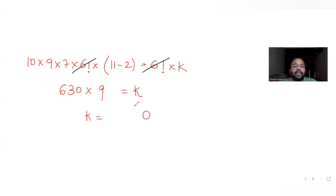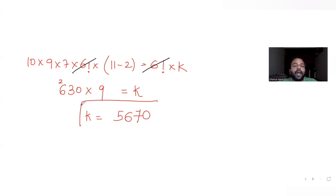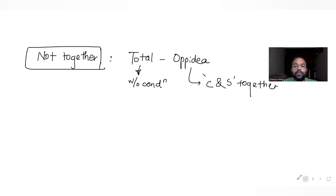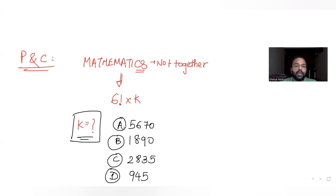After cancelling 6 factorial from both sides, the calculation gives 10 × 63 = 630, and 630 × 9 = 5670. So K equals 5670. Checking the options, this matches option A, which is 5670. So option A is the correct answer.